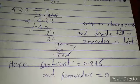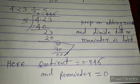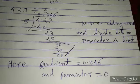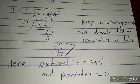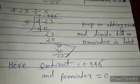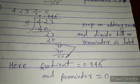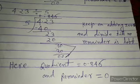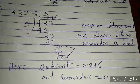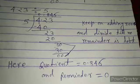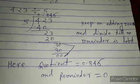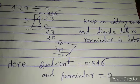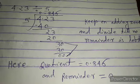Since 5×8 is 40, the remainder is 2, and 5×4 is 23 with remainder 3, which is not equal to 0. So we add 0 to continue the division. 5×6 is 30, so the remainder becomes 0. We keep adding 0 and dividing until no remainder is left. The quotient is 0.846 and the remainder is 0.